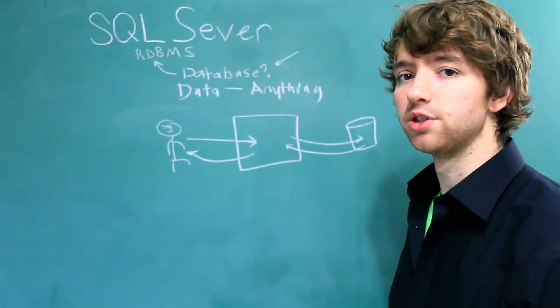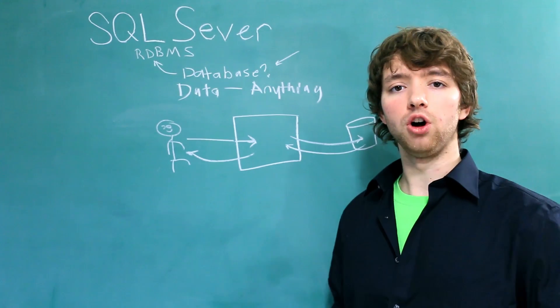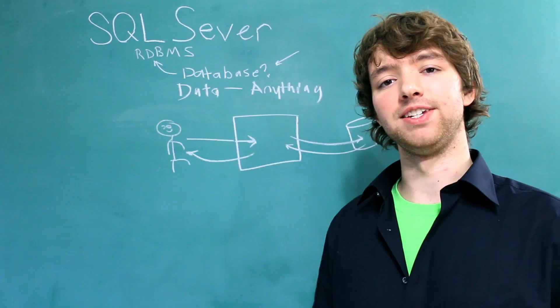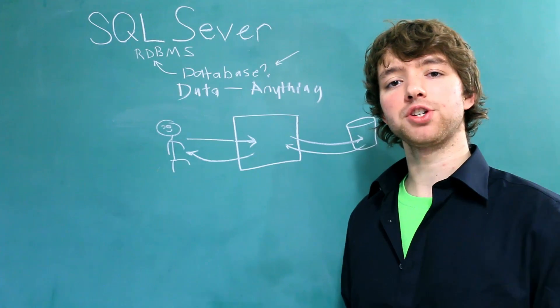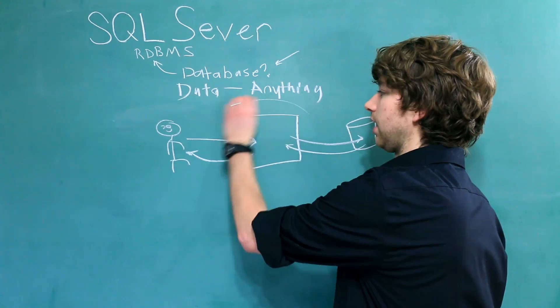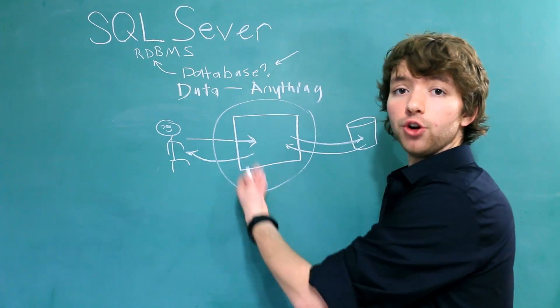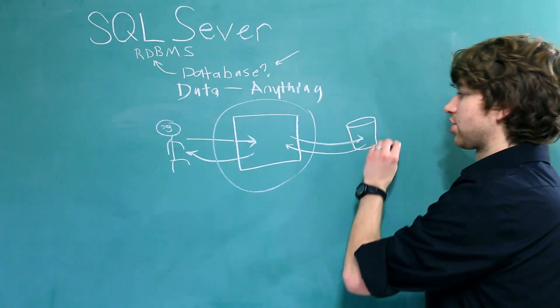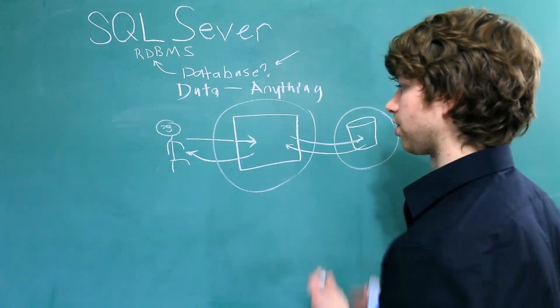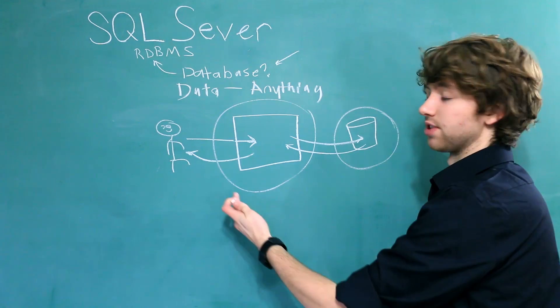So databases are often used for websites, when you sign in, when you create user accounts, when you purchase stuff. All of that data is stored inside of a database. That's because the application itself does not change. The code used to create this application stays the same. You can run this application over and over and over again, and the only thing that changes is the data. So there's a separation between the application and the data that powers that application.